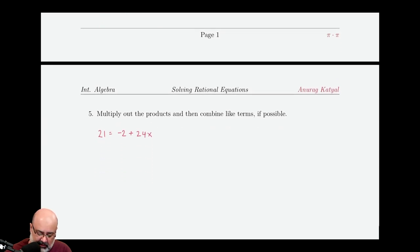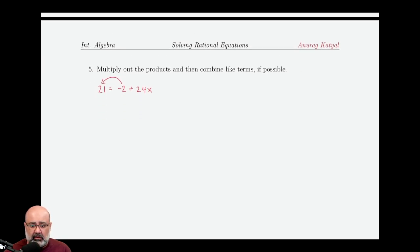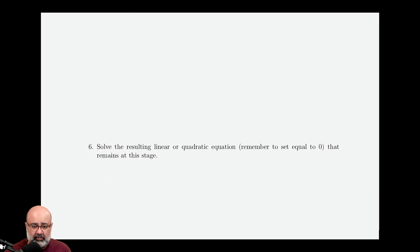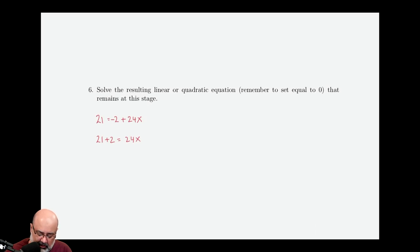So we copy down the equation as it is. But what we could do is move the negative 2 over to the other side. Which actually is the very next step. Solve the resulting linear or quadratic equation. Remember to set the quadratic equations equal to 0. So here, all we have to do is move the negative 2 over to the other side. So 21 plus 2, negative 2 plus 24x. So move the negative 2 over to the left, which makes it 21 plus 2 equals 24x. 21 plus 2 is 23, equals 24x. Divide both sides by 24 to solve for x. And you get x equals 23 over 24.